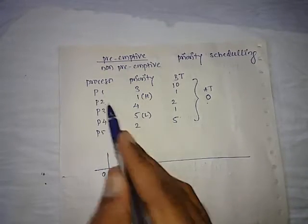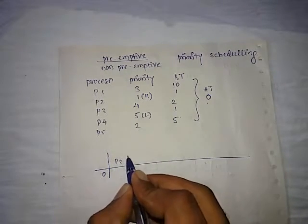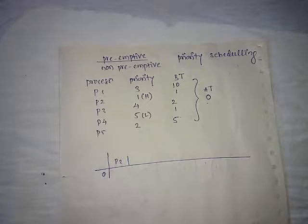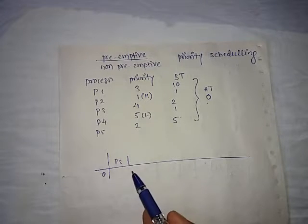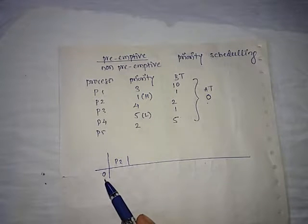There's a confusing part whether it's non-preemptive or preemptive, but both statements mean the same in this example. Even though we're considering preemptive priority, at time zero we have all the processes, meaning we cannot break anything. So we treat it as non-preemptive.